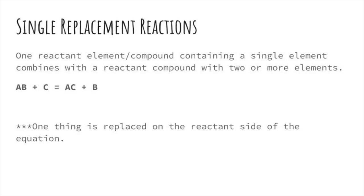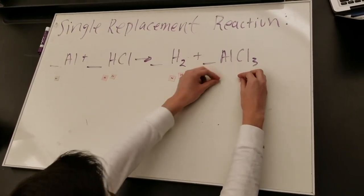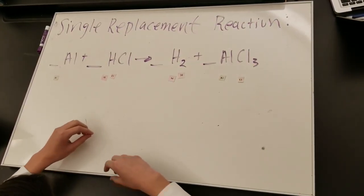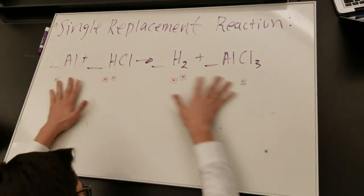Single replacement reactions take place when you have one reactant element or compound containing one element combining with a reactant compound that contains two elements. One thing is replaced on the reactant side of the equation. Try balancing this out.